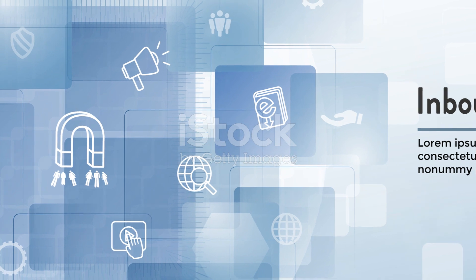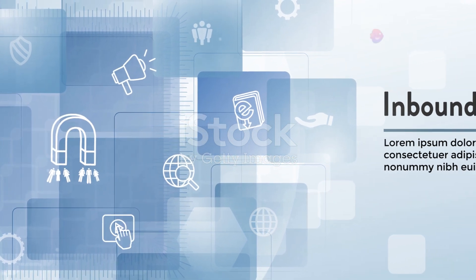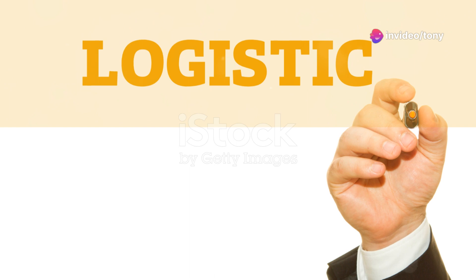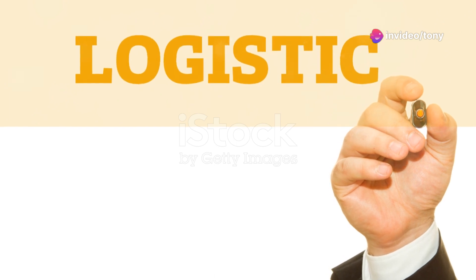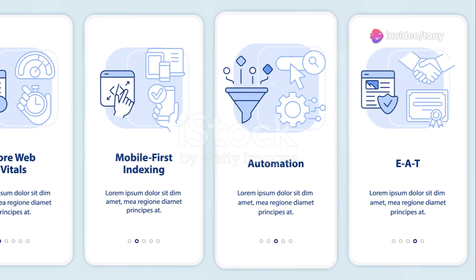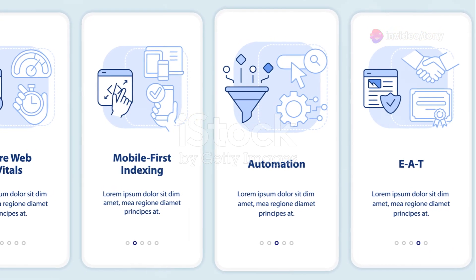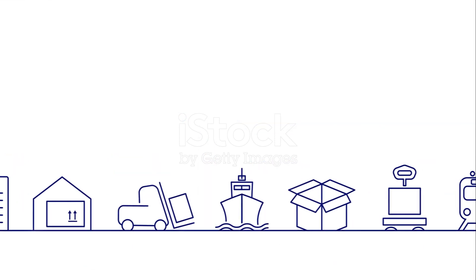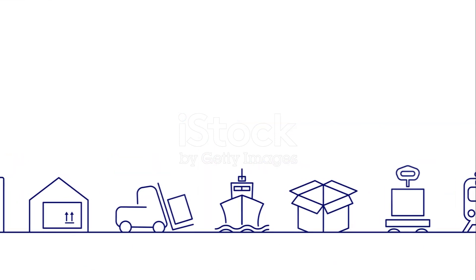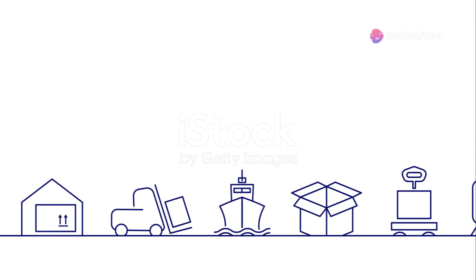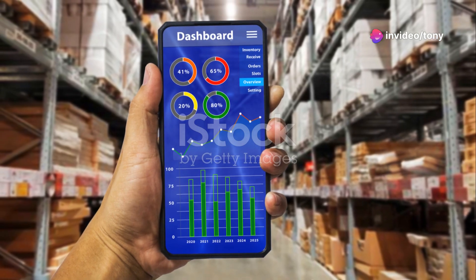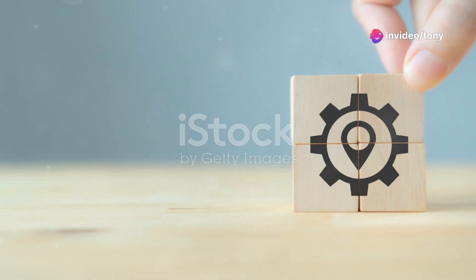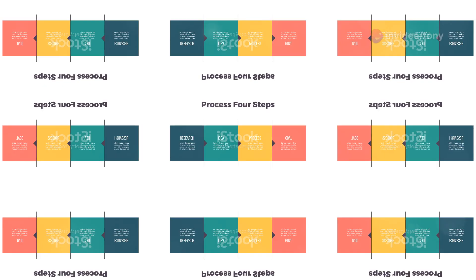In summary, the core functionalities of SAP MM are essential for businesses to effectively manage their materials management operations. From procurement to inventory control and invoice verification, SAP MM provides a comprehensive suite of tools to streamline these processes. This enables businesses to optimize their supply chain, reduce costs, and improve overall efficiency.